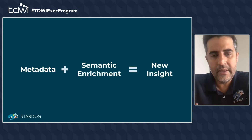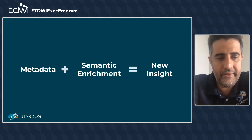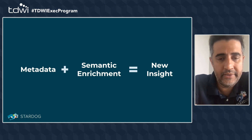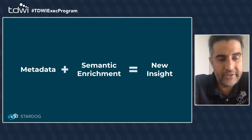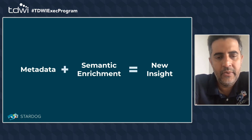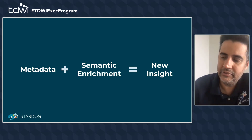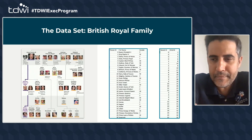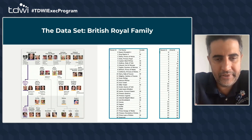Looking at this from a data architecture lens: we have technical metadata that resides in the systems where we store data — the tables, the columns, and their descriptions. When we add semantic enrichment to that metadata, we position ourselves to gain new insight. Let's use a real-world example to illustrate this.